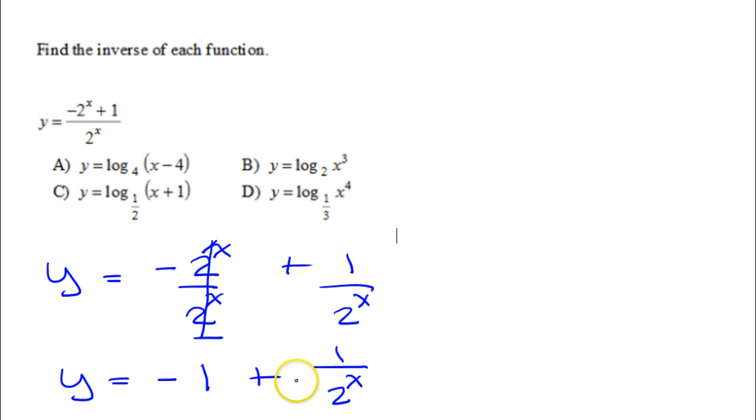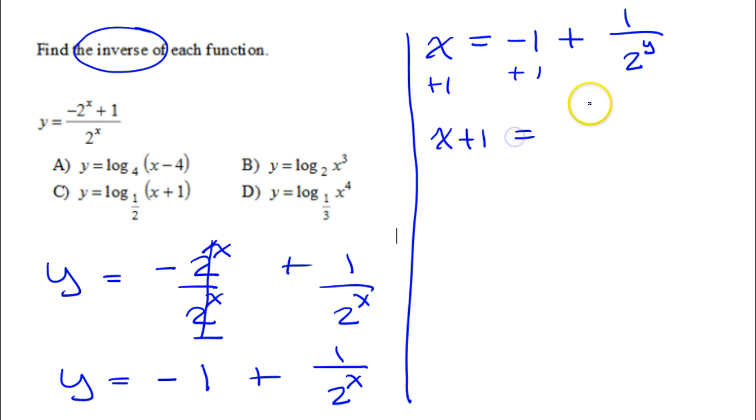So next thing I need to do, remember we're finding the inverse. So the two steps of finding the inverse are switch x and y, and then solve for y. So it's time to switch x and y. So this will become x = -1 + 1/2^y. And now I just need to solve for y. The first thing I can do is move this 1 over by adding 1 to both sides. So now I have x + 1 = 1/2^y.